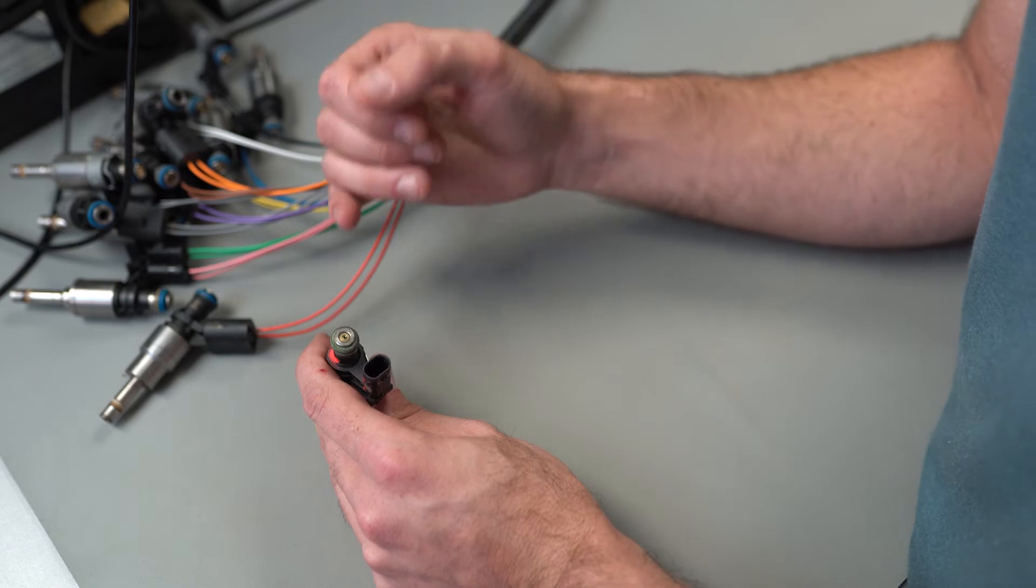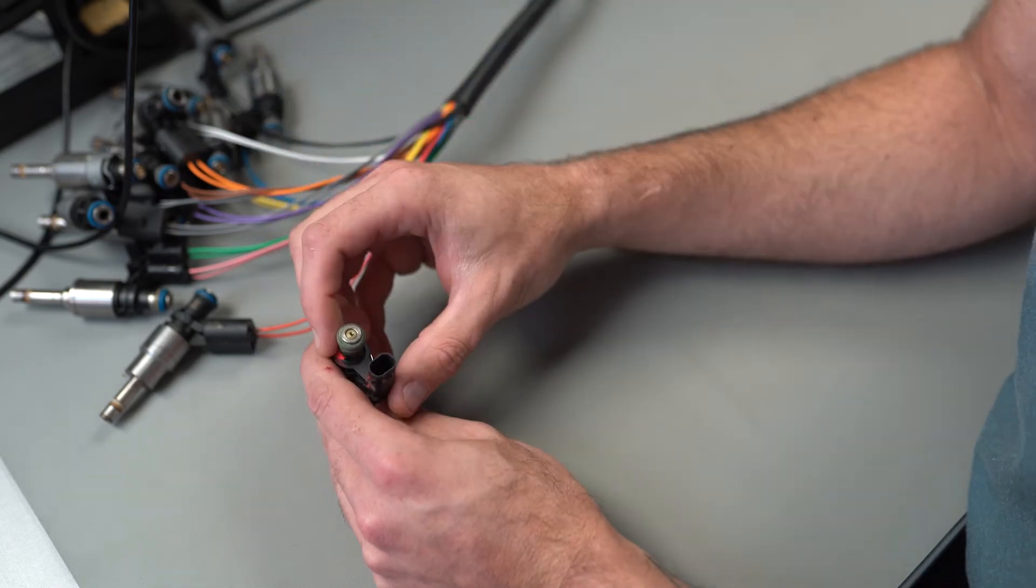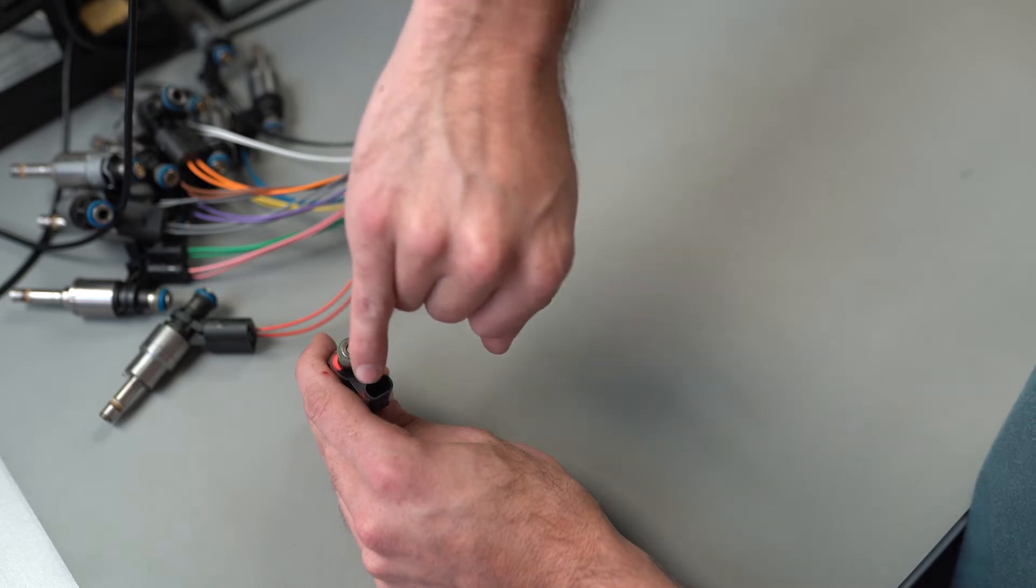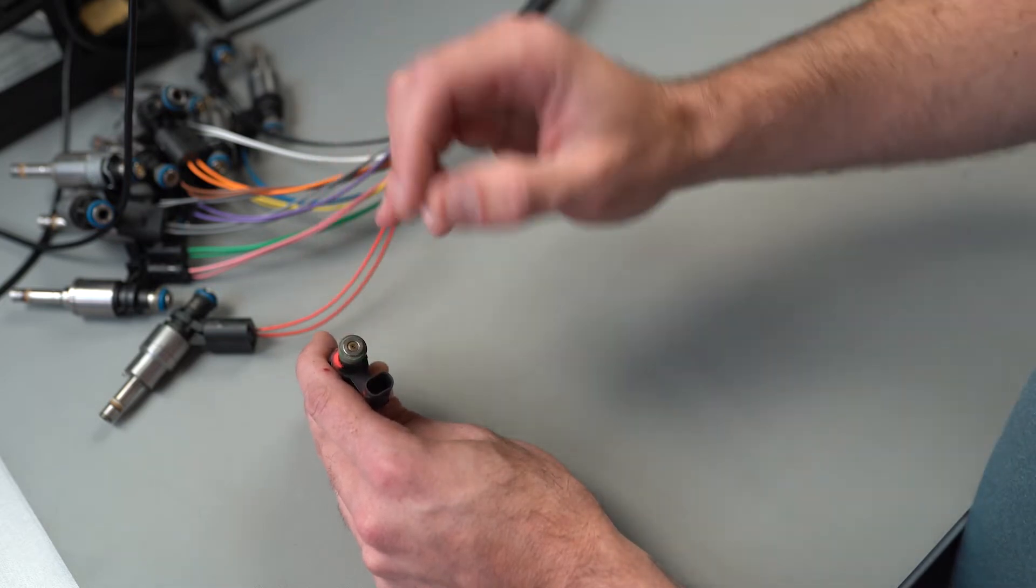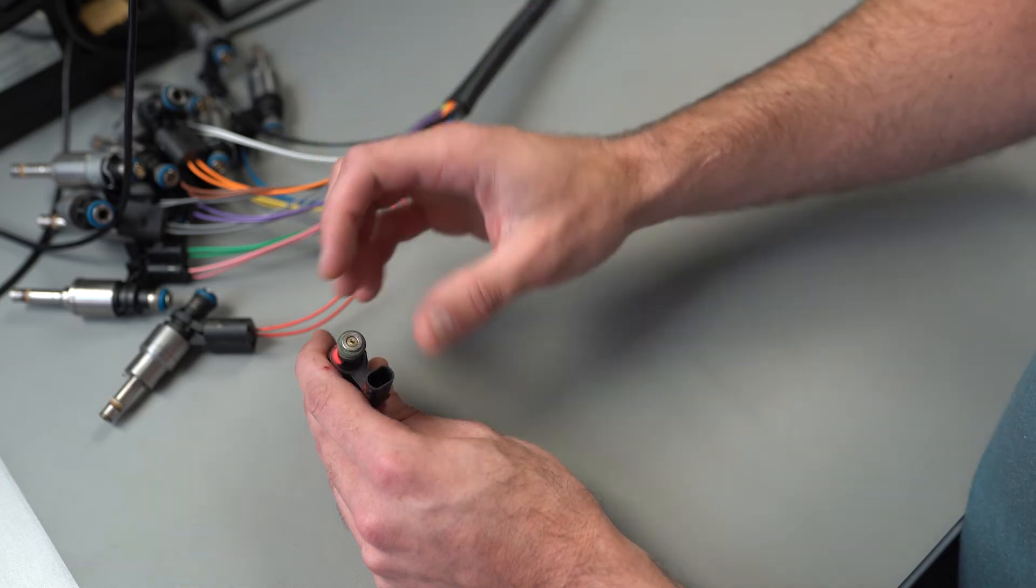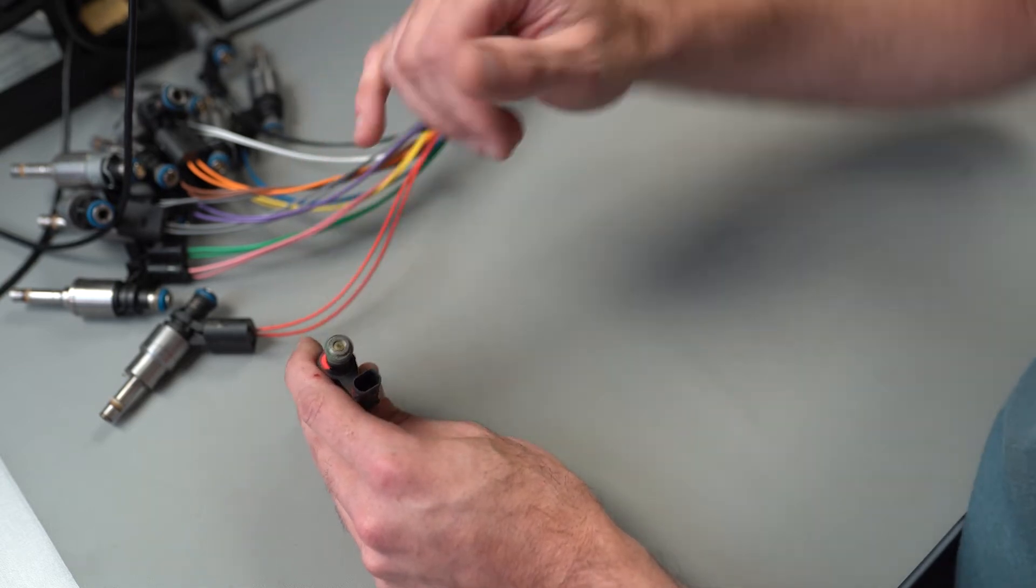And we're going to come into a video later on about soldering techniques and how to do it properly. So keep an eye out for that one. We would solder directly onto the pin and make sure it's nice and neat. There's no spillage of solder. It's not touching the pins on either side, because that could be pretty bad.